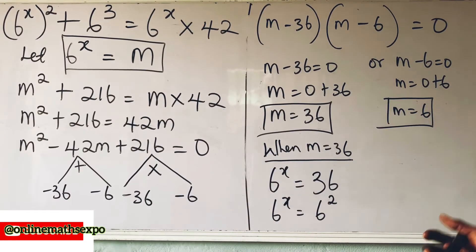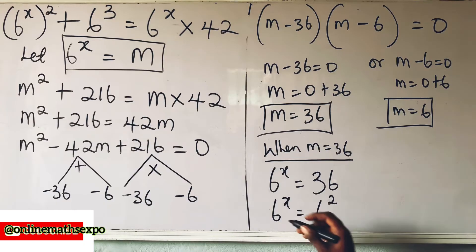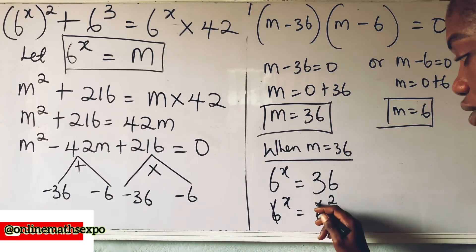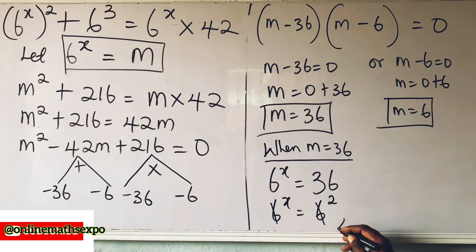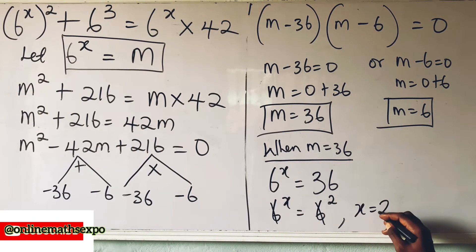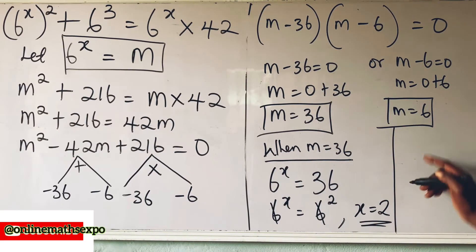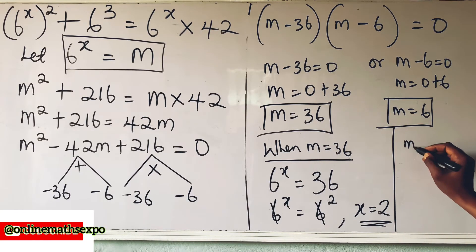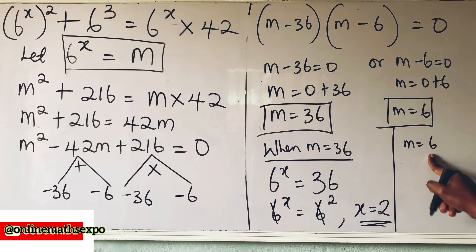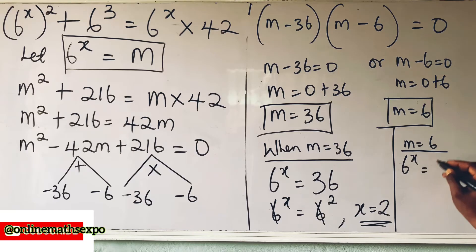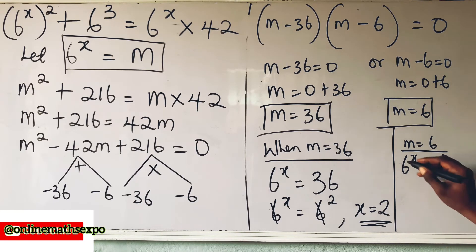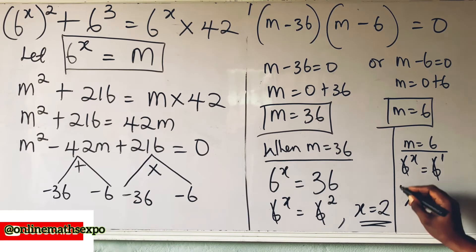When m is 6: 6 to the power of x equals 6, which is 6 to the power of 1. Since the bases are the same we cancel them, so x equals 1. We now have two values of x: x equals 2 and x equals 1.